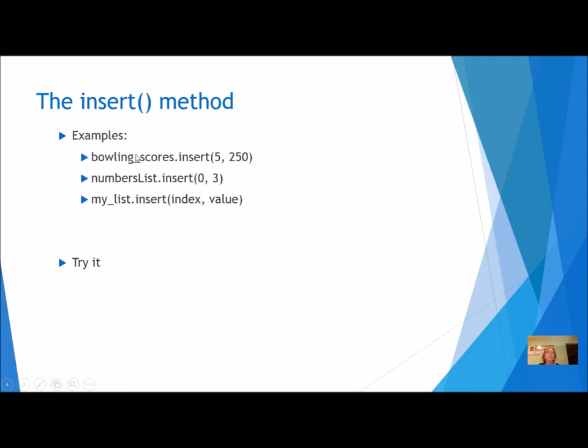Here's some examples of code that uses the insert method. So if I had a list of bowling_scores.insert, and I'm going to insert it at position five, so it's going to be the sixth element, and here's the value that I'm going to insert there. If I want to put it at the very beginning, maybe I have a list called numbers_list.insert. The zero is the very first position, and I'm going to insert the value three, and this is just kind of in general. I can use variables. I can have a variable for the index and I can have a variable for the value.